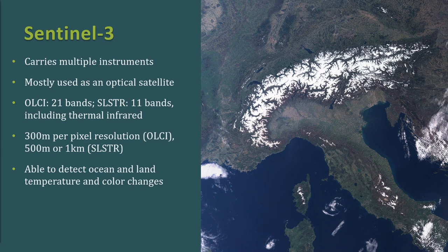Next is Sentinel-3, which carries multiple instruments and is mostly used as an optical satellite. The OLCI instrument has 21 bands and the SLSTR instrument contains 11 bands, including thermal infrared. The resolution is about 300 meters per pixel for OLCI and 500 meters to 1 kilometer for SLSTR. The main purpose of Sentinel-3 is to detect ocean and land temperature and color changes.